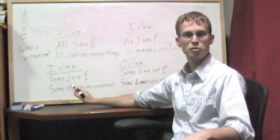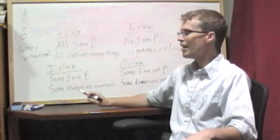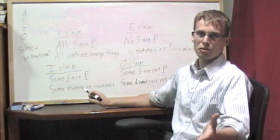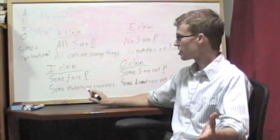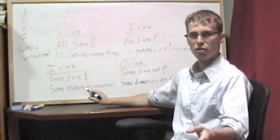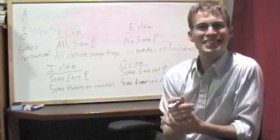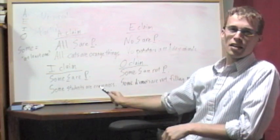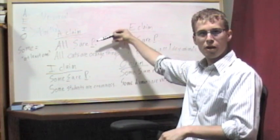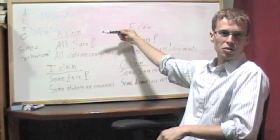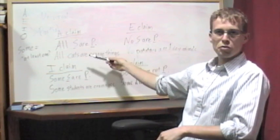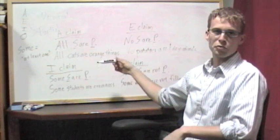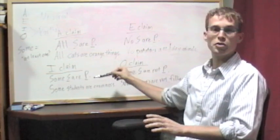But, it could also be the case that it's not true that all students are crammers. But, some students still are crammers. So, what I'm saying is that just because the I claim is true, that doesn't tell us whether the corresponding A claim is true or false. It could be that all students are crammers. It could be that not all students are crammers. We just don't know. So, we don't want to assume that.